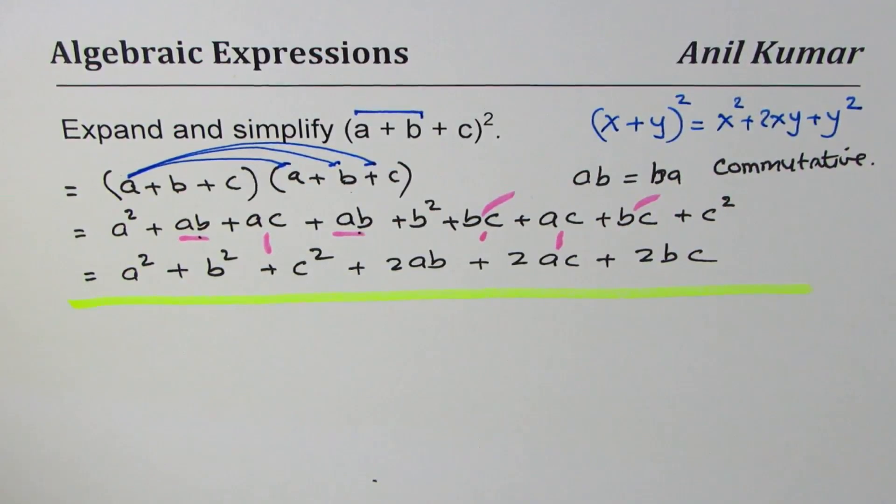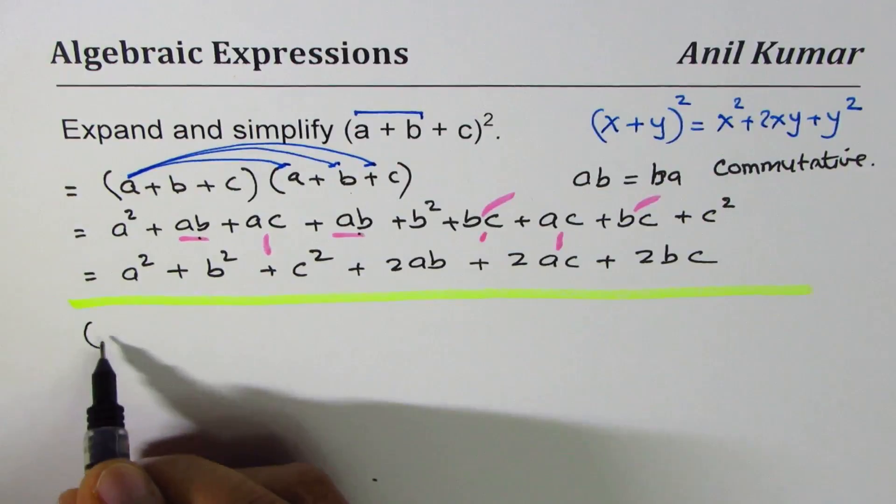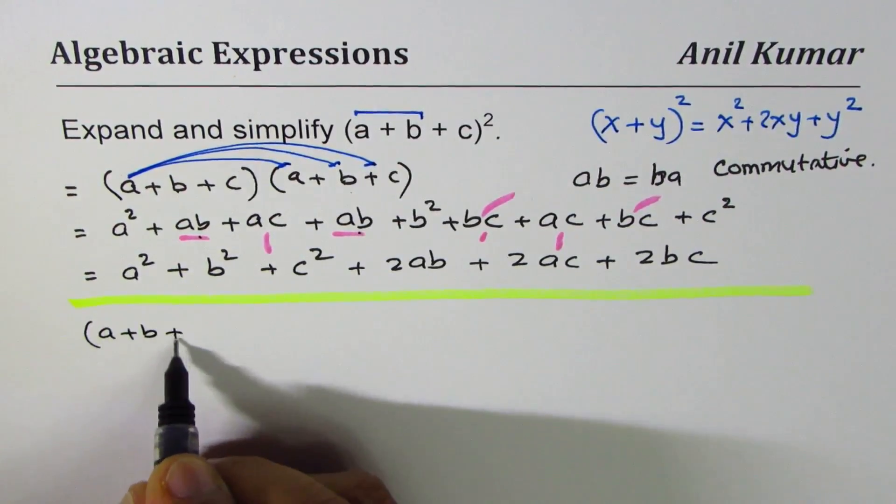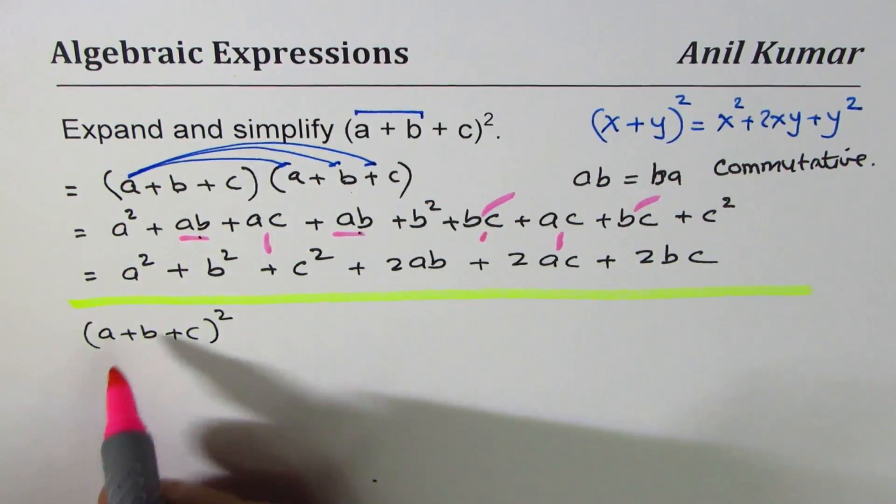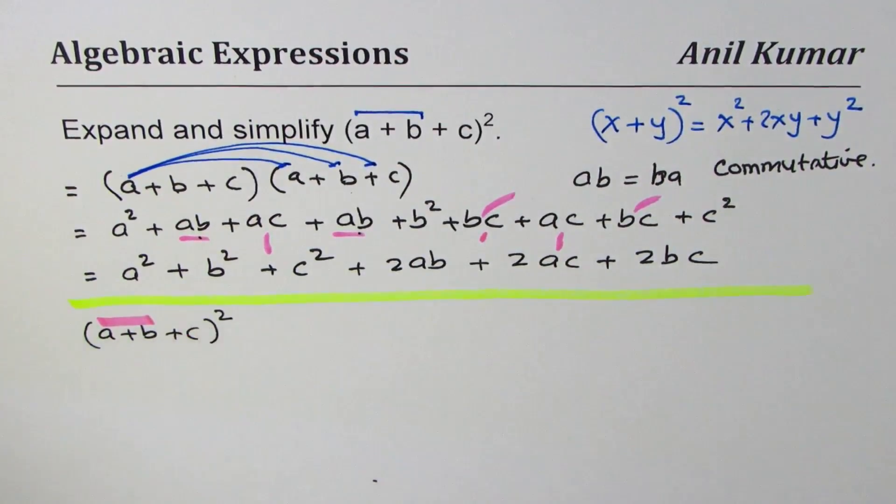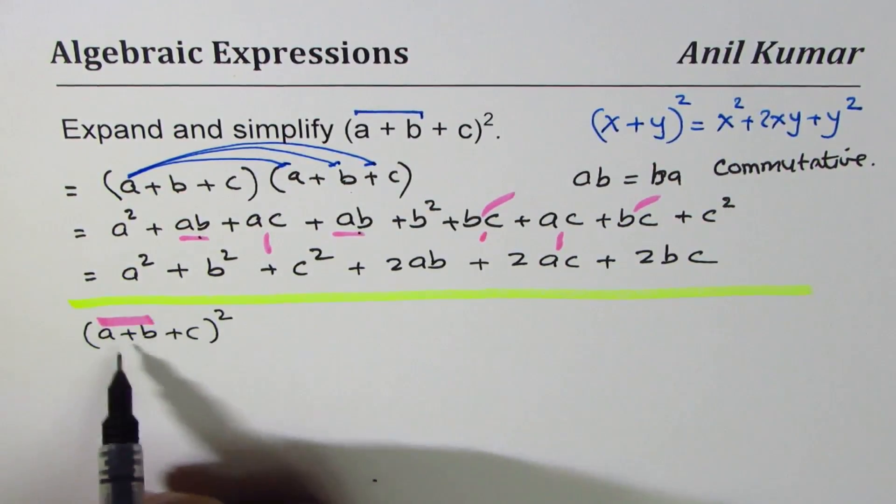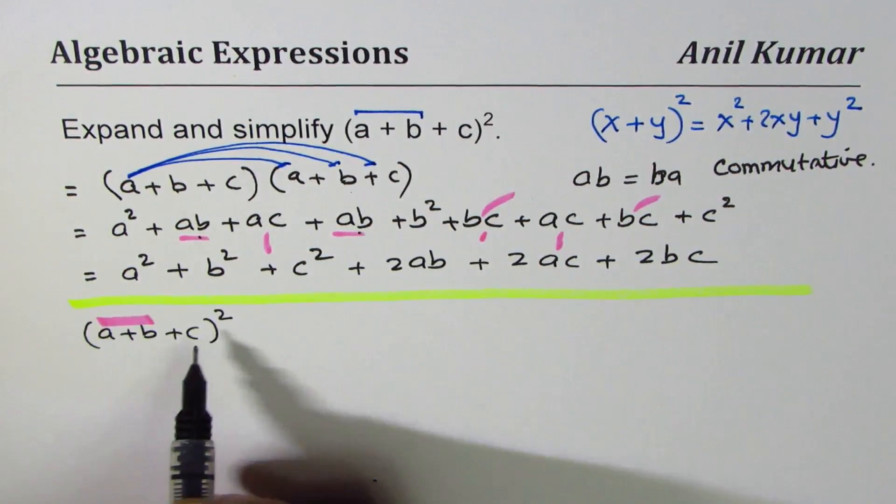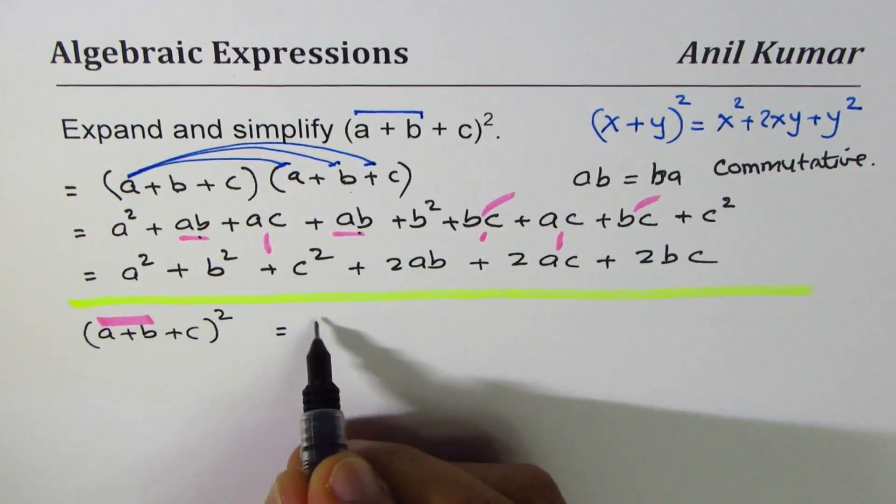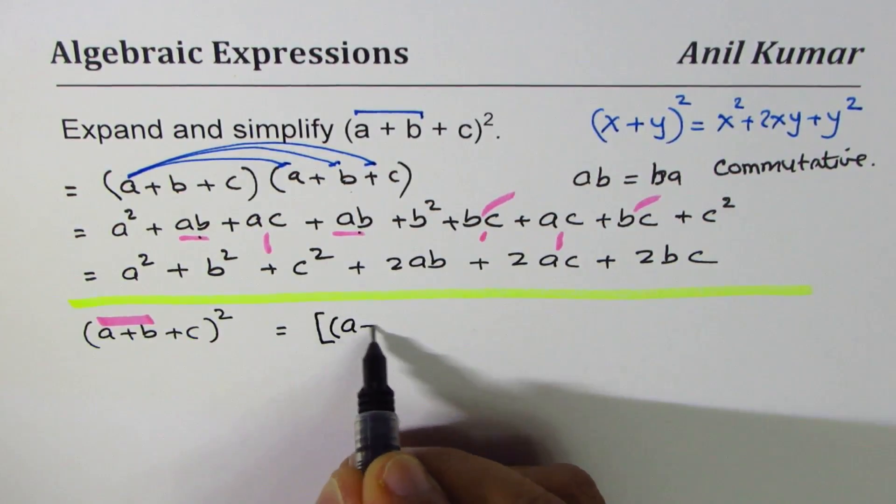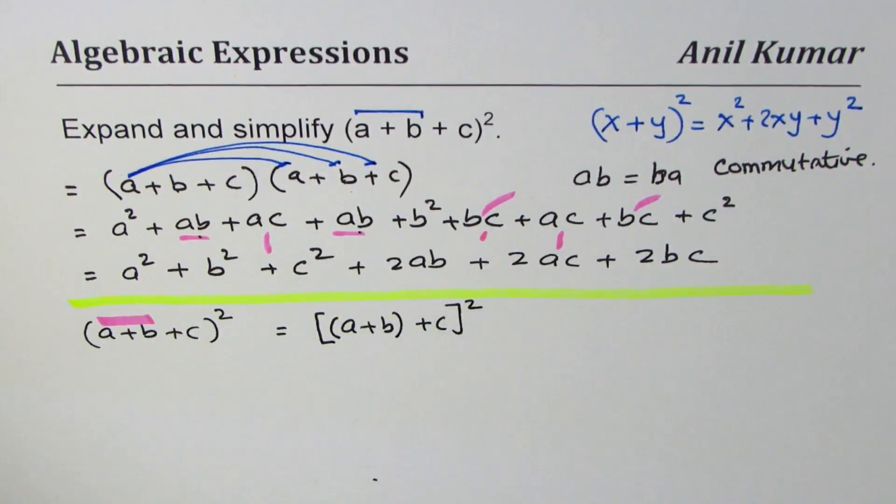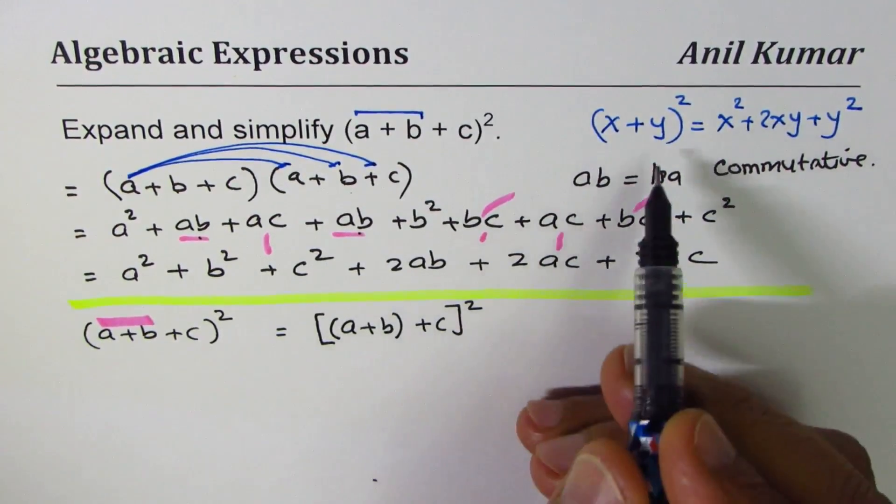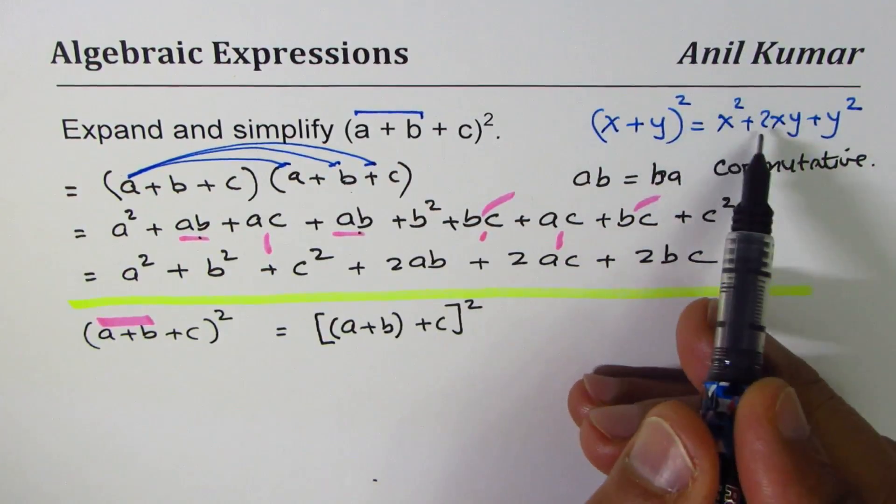Now let us do the alternate method. Sometimes that may be the requirement. So we'll write this time (a + b + c)². We'll use the formula. We'll treat this as our first term x and this as y. So what I'm trying to say here is let me write like this: I am using (a + b) as one term plus c whole square. That is what I'm trying to do.